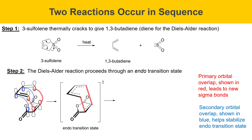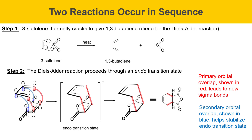The endo transition state is shown here with dotted lines indicating partially formed or broken bonds, and the new bonds forming are highlighted in pink. When those bonds actually form, it leads to the cyclohexene product. One picture shows the product in an edge perspective, which is equivalent to another picture showing the cis stereochemistry in the final product.